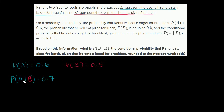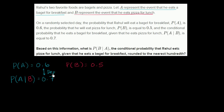And because these two things are not the same — because the probability of A by itself is different than the probability of A given that B is true — this tells us that these two events are not independent, that we're dealing with dependent probability. The fact that B being true has changed the probability of A being true tells us that A and B are dependent.